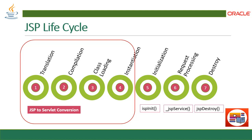The next step is class loading. Once compilation is done, the class file is further processed to convert it into bytecode. After loading the bytecode, the next step is instantiation — creating an instance of that particular request. So from translation through instantiation are the extra steps you do in JSP processing, and this is called JSP to servlet conversion.